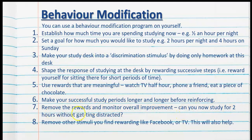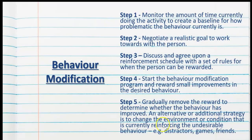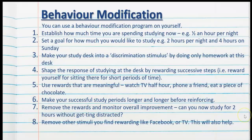Eventually the goal is to remove all of the rewards and monitor the overall improvement — so can you now study for two hours without getting distracted? The last step should be to remove other stimuli that you find rewarding, like Facebook, TV, or other forms of distraction. It's also good to modify the environment so you don't have other distractors, making your study area desirable and relaxing while removing any distracting elements.